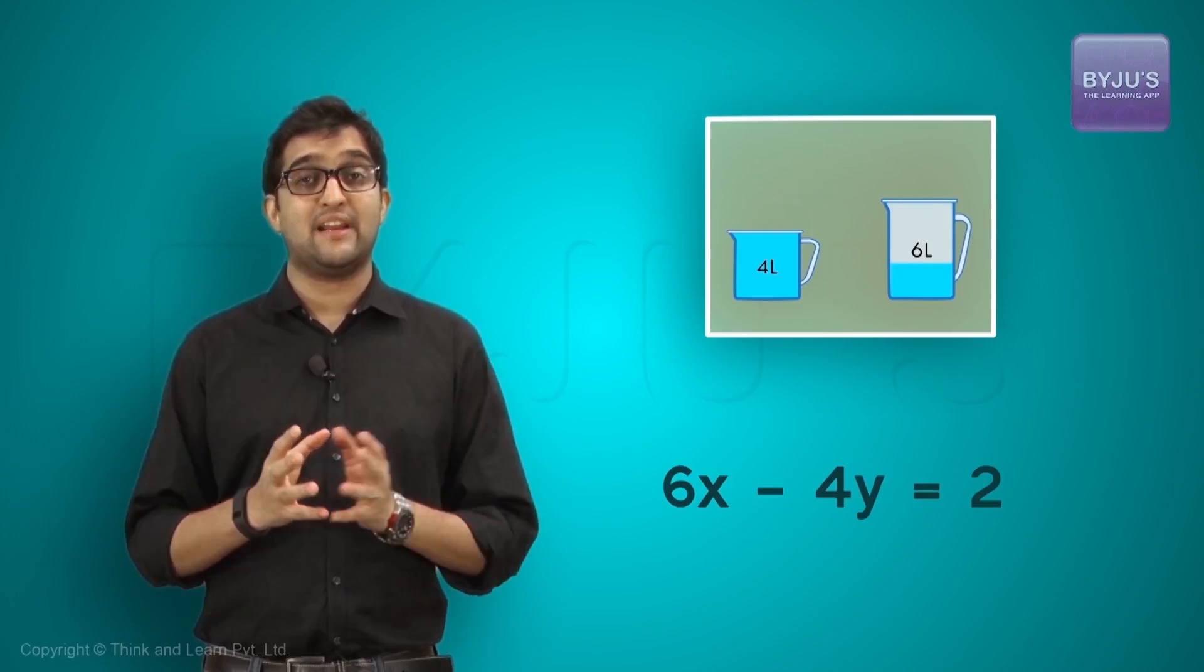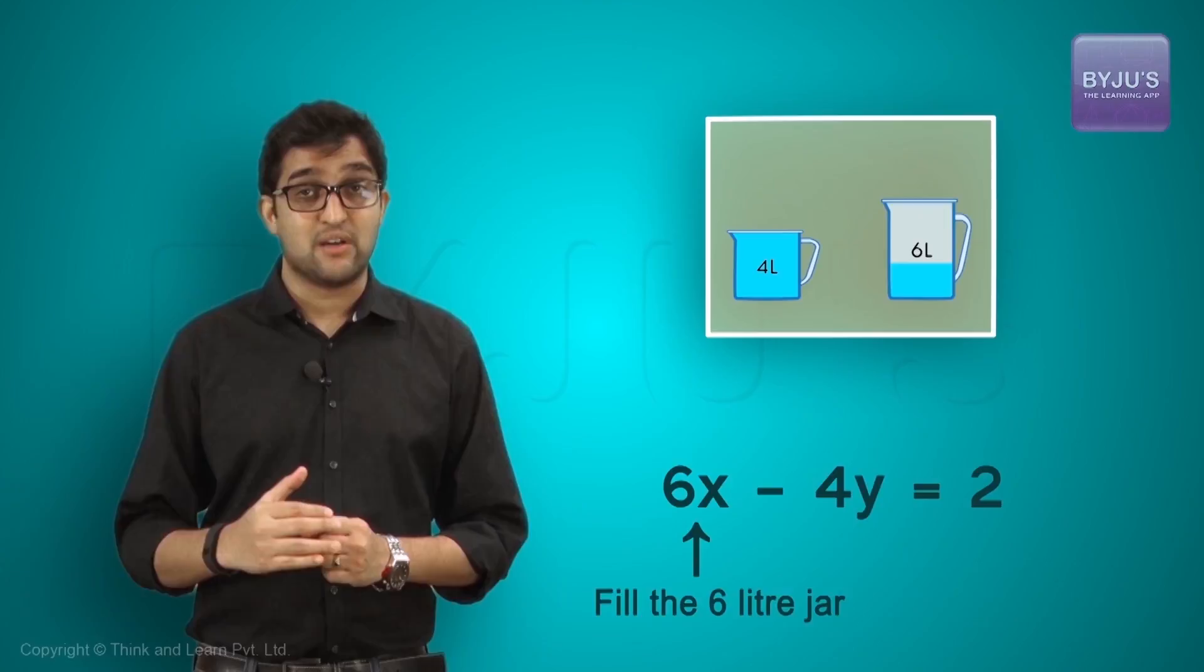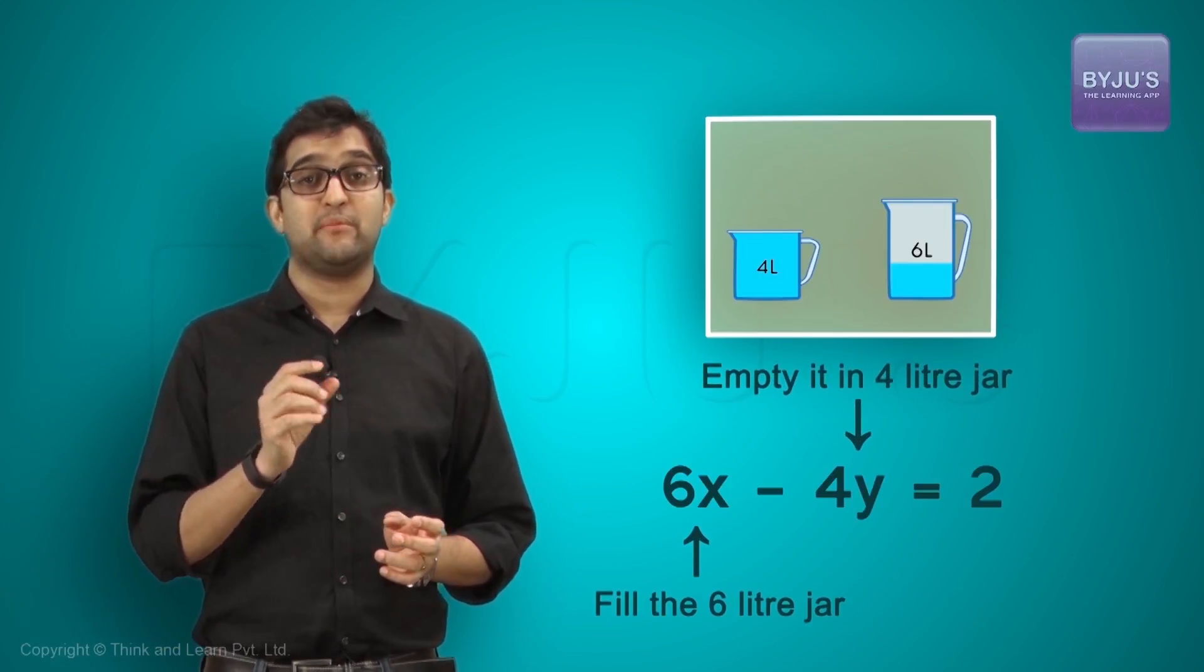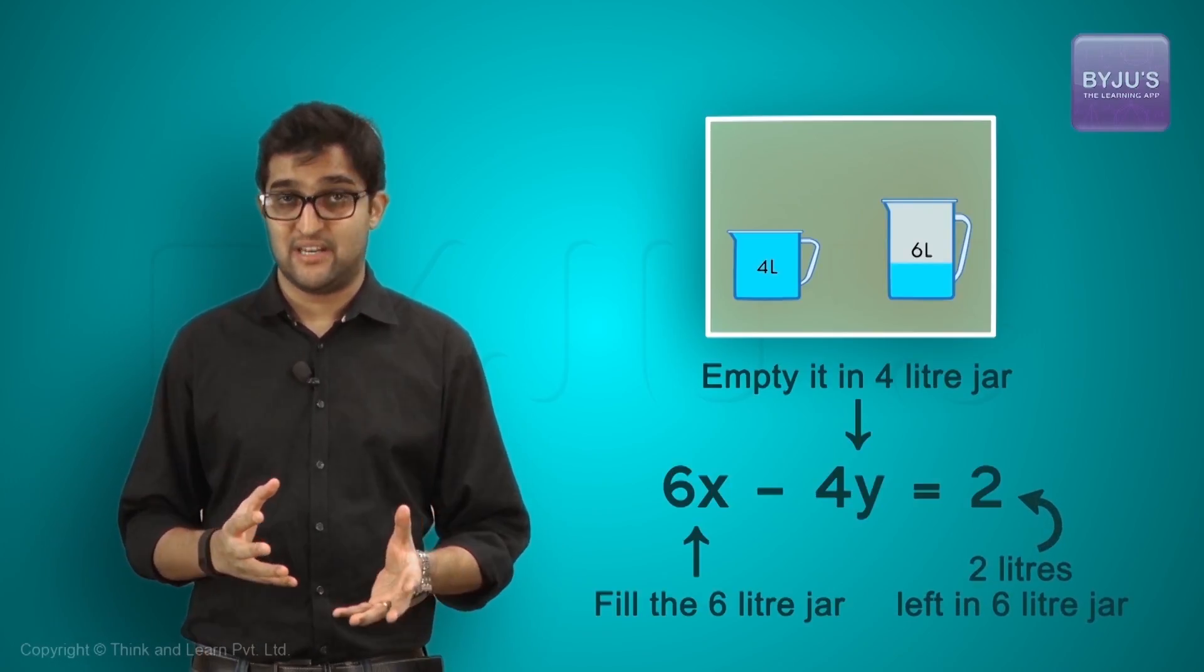So for that solution, RHS is equal to 2 and this basically means that if we fill the 6 liters jar and empty into 4 liters, the negative sign means empty into 4 liters, we are left out with 2 liters in the 6 liters jar.